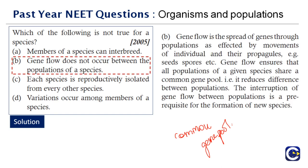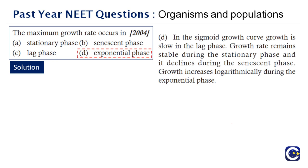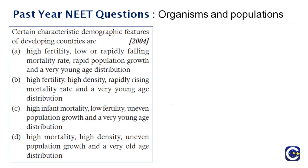Next question: the maximum growth rate occurs in — when you take a graph, the stationary phase shows stable growth, the lag phase shows slow initial growth, and the senescent phase is the declining phase. The exponential phase is the maximum growth phase. Therefore the right answer is option B — exponential phase, where growth is at its peak.